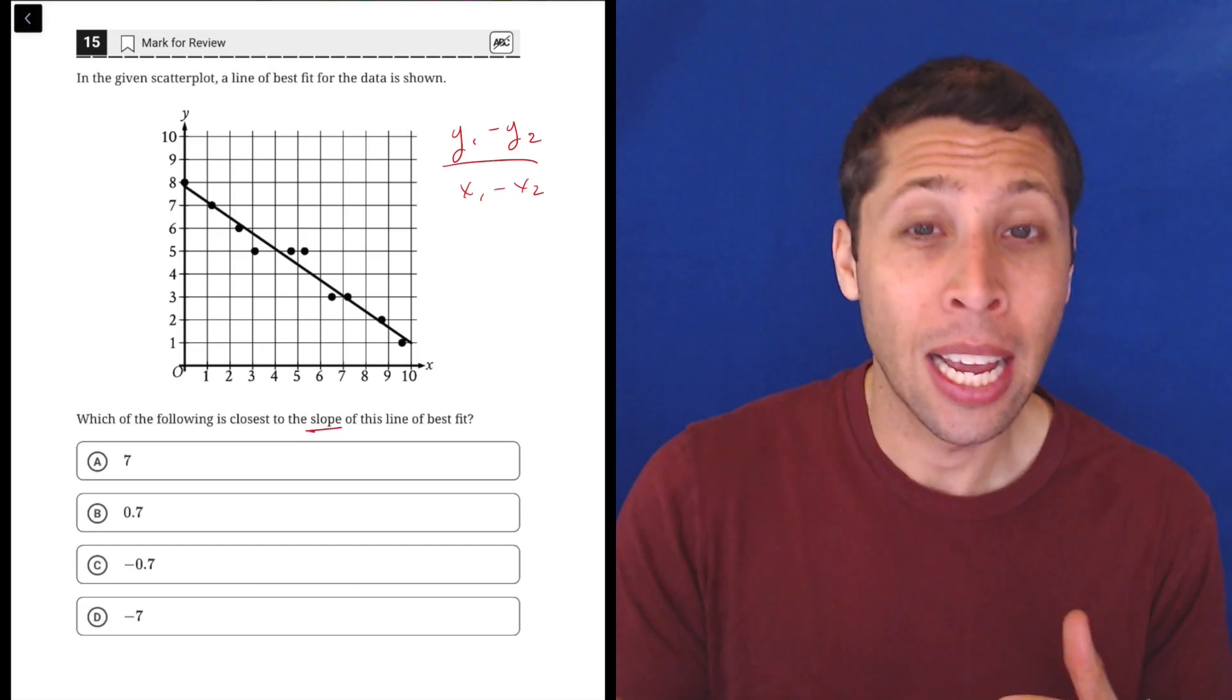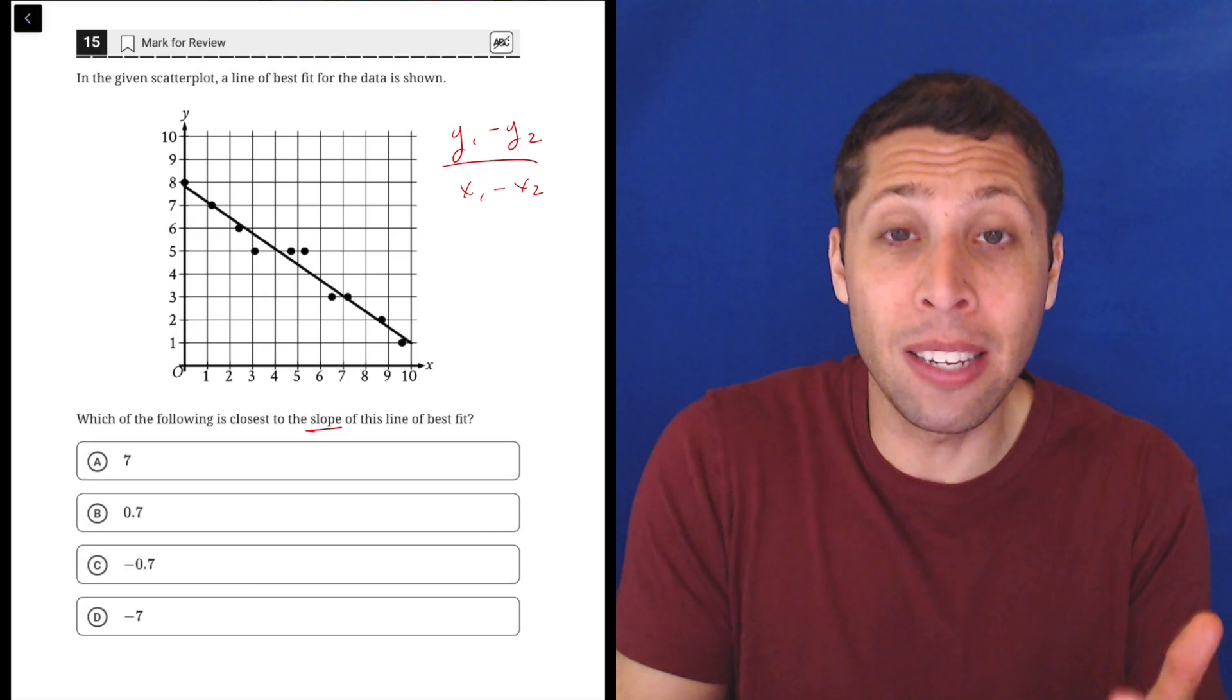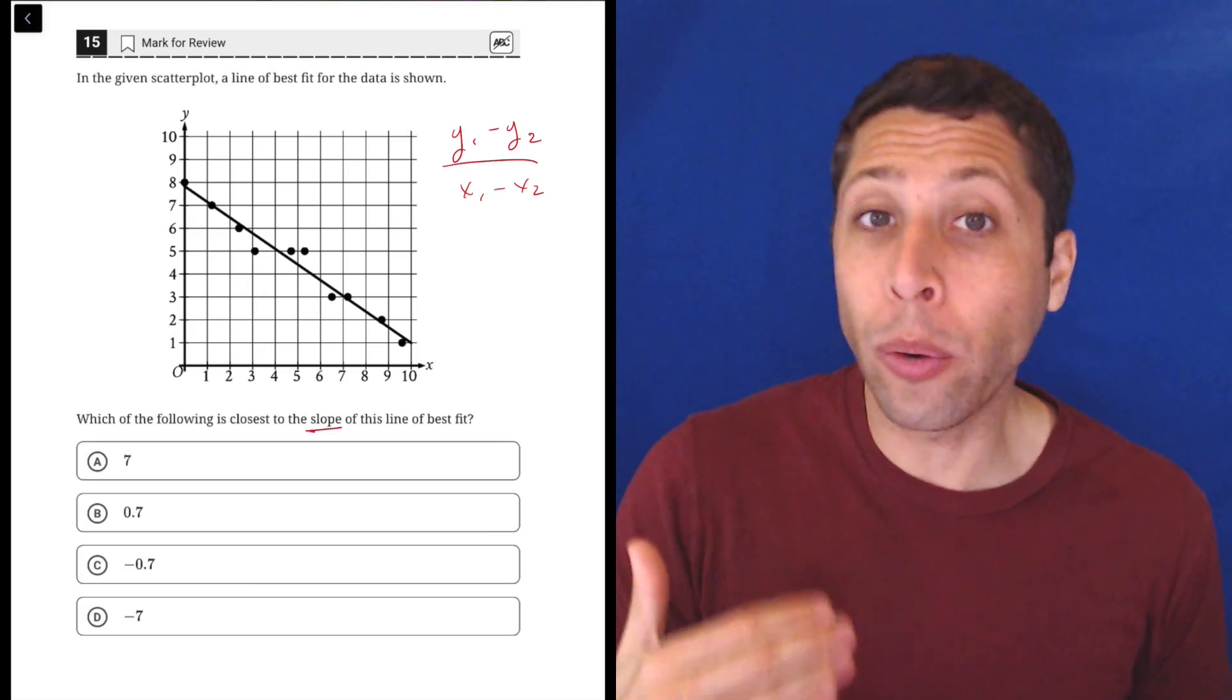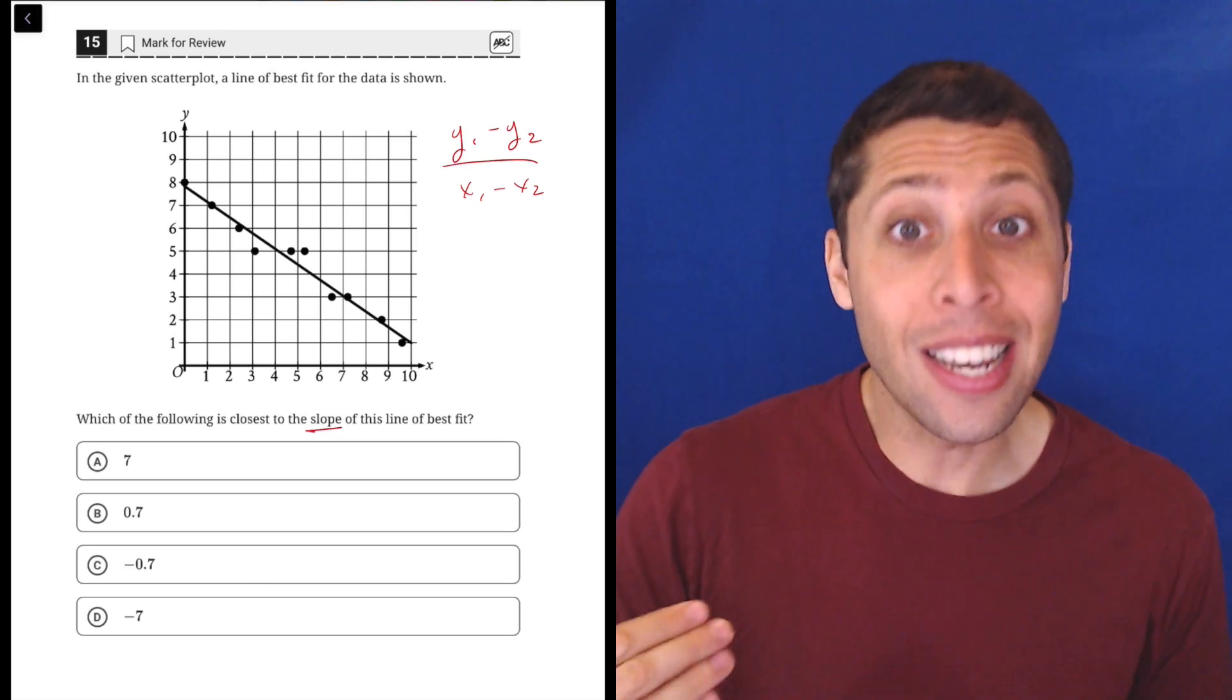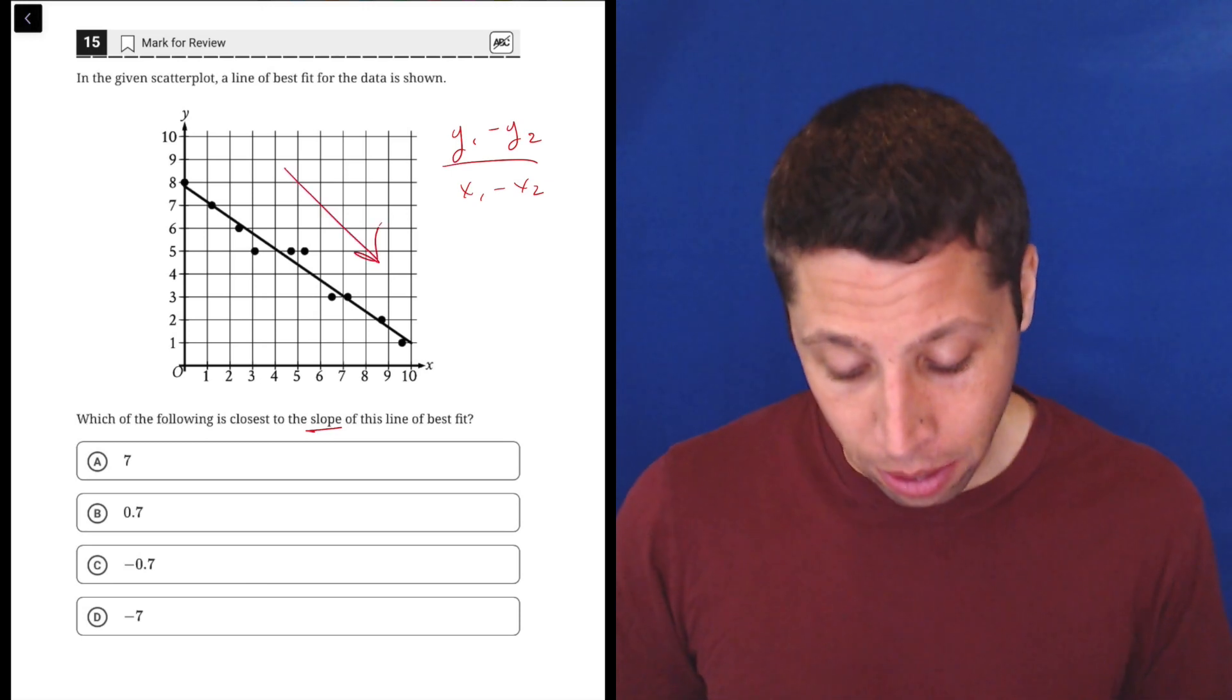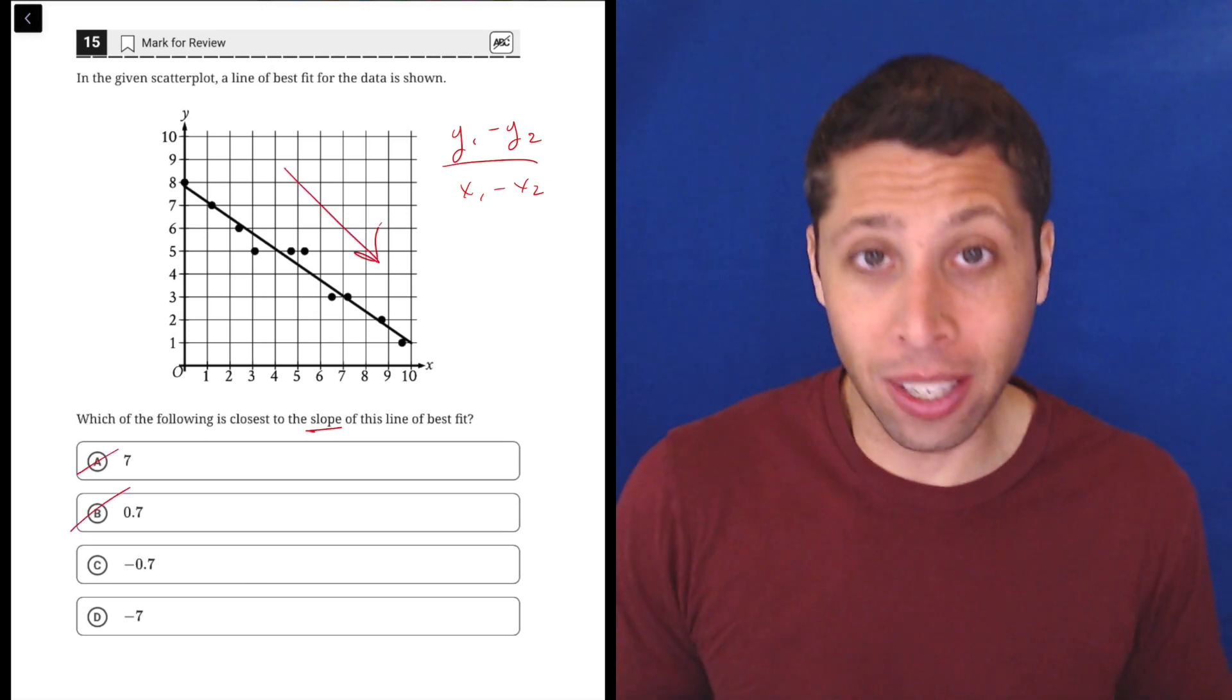We need to remember it's a multiple choice test. We don't need to solve everything the way your math teacher would make you solve it in school. We can just kind of look at it and sometimes at least eliminate some answers very easily. Here what do we know right away about this line just by looking at it? Well, it's a negative slope, it's going down. So that gets rid of A and B, and just like that we're down to a 50-50 shot.